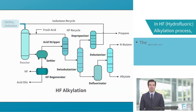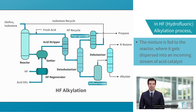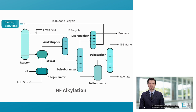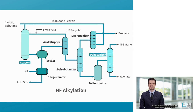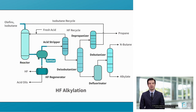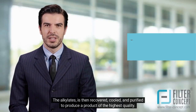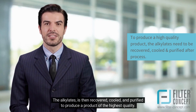In the HF (hydrofluoric) alkylation process, the mixture is fed to the reactor, where it is highly dispersed into an incoming stream of acid catalyst. By dispersing the mixture into the incoming stream of acid catalyst, it allows for a more uniform reaction to take place, which increases the efficiency of the transformation of reactants to alkylate. Conversion of reactants to high-quality alkylate takes place quickly. The alkylate is then recovered, cooled, and purified to produce a product of the highest quality.